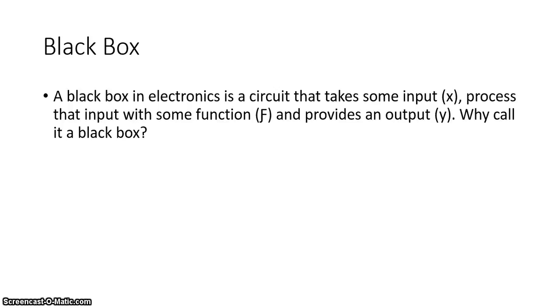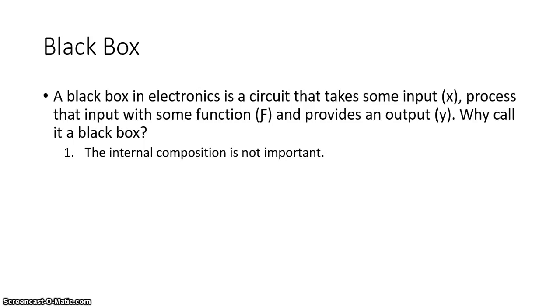Let's start with what exactly a black box is. We've had a discussion on black box systems before in previous classes, but it's a good idea to refresh your memory. A black box in electronics is a circuit that takes in some input — represented with the letter X — processes that input with some function, and provides an output Y. We do not care about the actual composition of that circuit; we care that it acts in a predictable fashion, with a specific function.